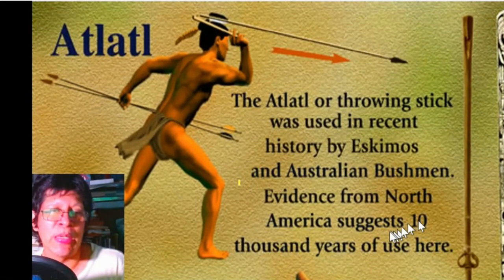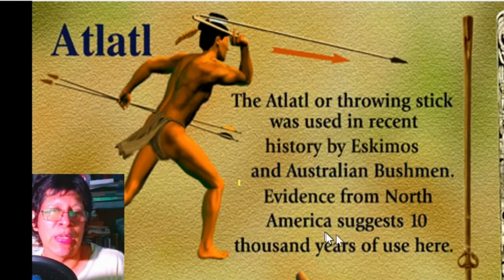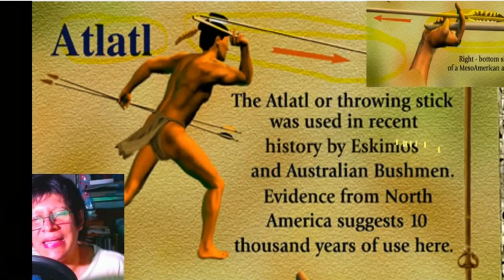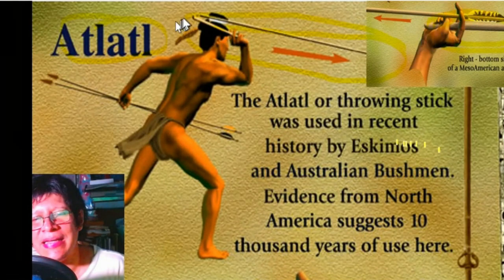For more than 10,000 years, the atlatl — a throwing stick — was used in recent history by the Aztecs, and there is also the coincidence that it was invented in Australia as well. Evidence from North America shows just 10,000 years of use. They would use it for war but mostly to hunt animals, as this device would give a lot of energy to the projectile and help them kill animals more effectively.